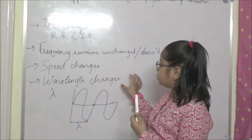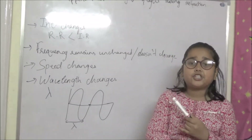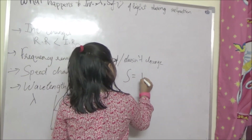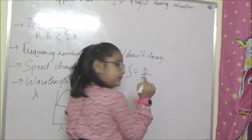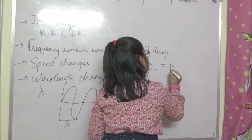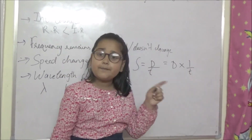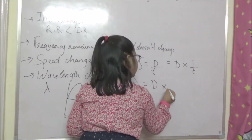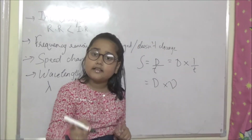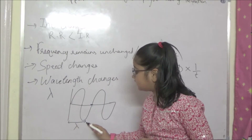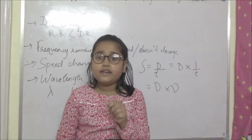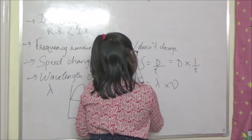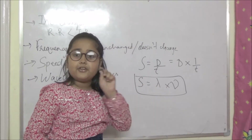Friends, wavelength changes during refraction. How? We can derive it from a formula. Speed equals distance upon time, which I can write as distance multiplied by one upon time. One upon time is frequency. So I can write: speed equals distance times frequency. The distance here is the wavelength. Therefore, the formula is: speed equals wavelength multiplied by frequency.